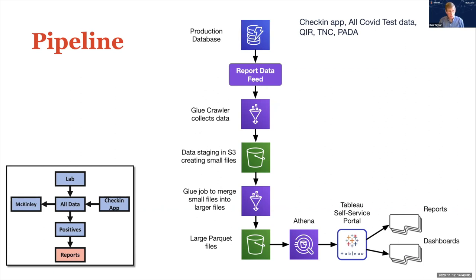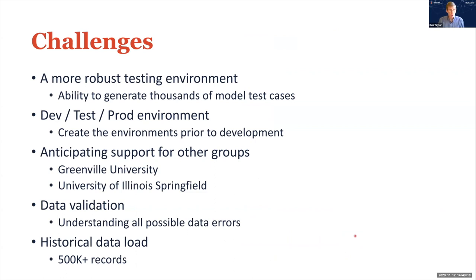There is the pipeline in a nutshell, but we had a lot of challenges along the way. One thing we really needed to do upfront was create a more robust testing environment. We were testing the pipeline on real lab data when we really needed a lot more dummy data. We are still completing our dev, test, and production environments to isolate developers from production. We need to anticipate support for other groups — we're already testing Greenville University and the University of Illinois Springfield, whose results get mingled with UIUC results. We have a lot of data validation to do for all the different data errors mentioned earlier.